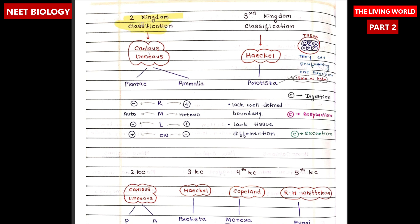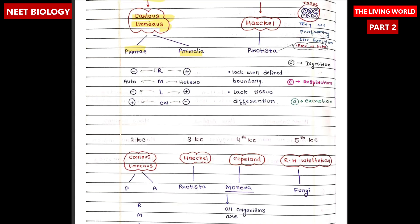Second kingdom classification was developed by Carlos Linnaeus, who categorized all living organisms into two primary parts: Plantae and Animalia. The basic differences between these two classifications were response to stimuli, mode of nutrition, locomotion, and cell wall.